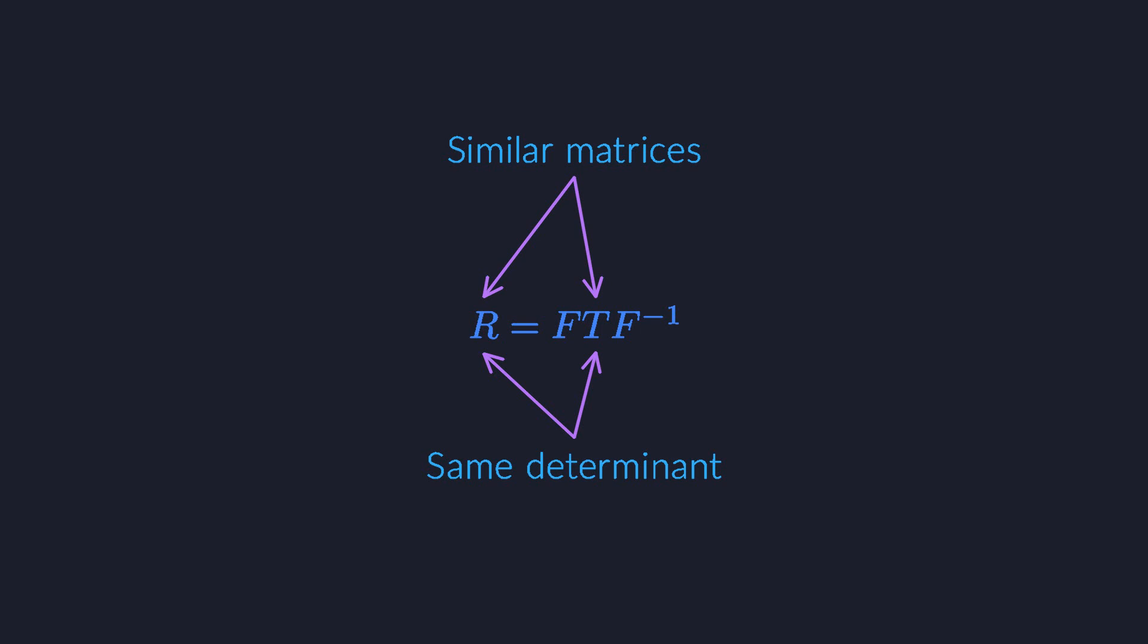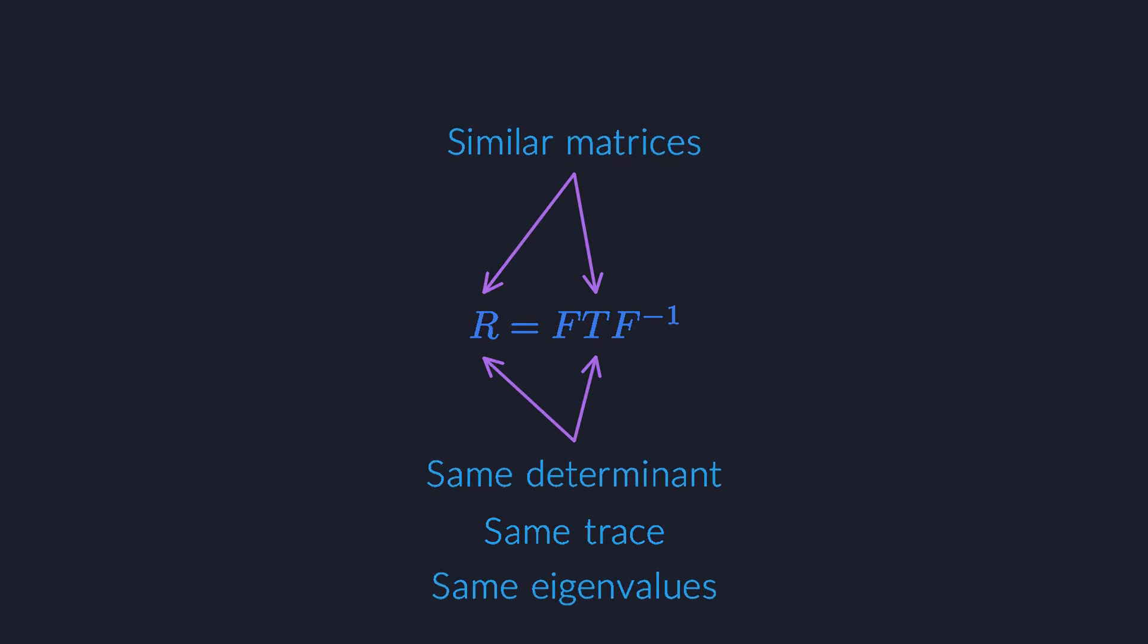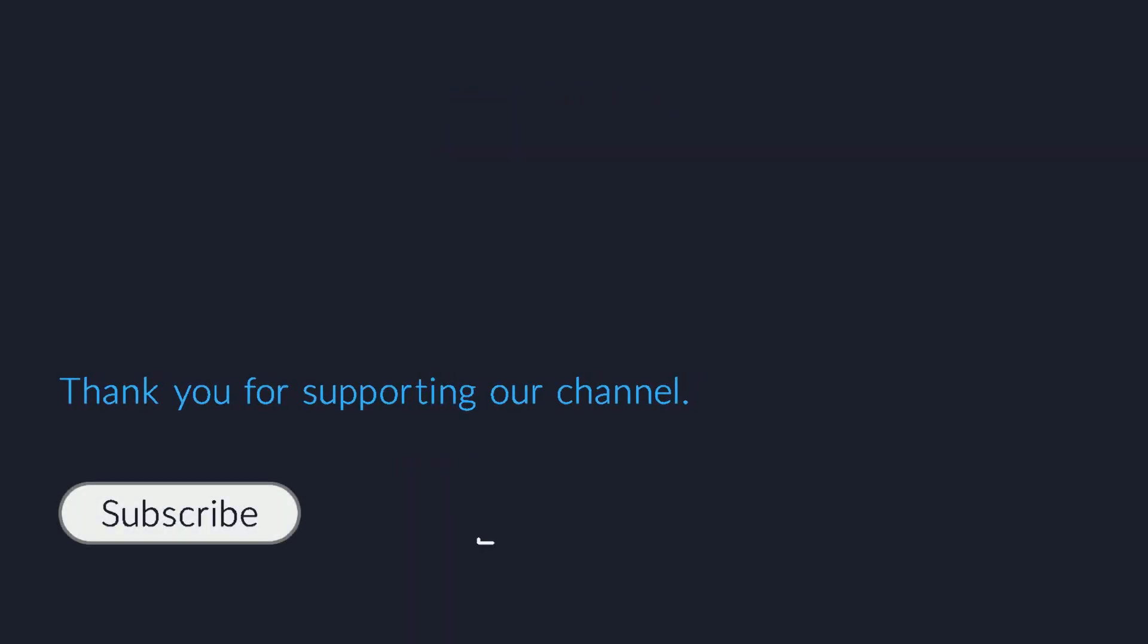The same goes for their trace, their eigenvalues, and many other properties. These properties are called invariants under a change of basis. We will use this in the next video, where we will find the eigenbasis for a matrix. Moving to the eigenbasis makes everything trivially easy, so it's a perfect example of our pattern. I hope you will join me there.